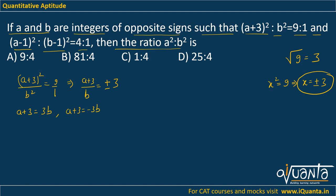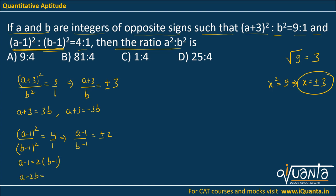From the second condition, (a-1)²/(b-1)² = 4:1, we again have a variable on the LHS, so (a-1)/(b-1) = ±2. Taking +2 gives a-1 = 2(b-1), which simplifies to a - 2b = -1 (equation 3). Taking -2 gives a-1 = -2(b-1), which simplifies to a + 2b = 3 (equation 4).